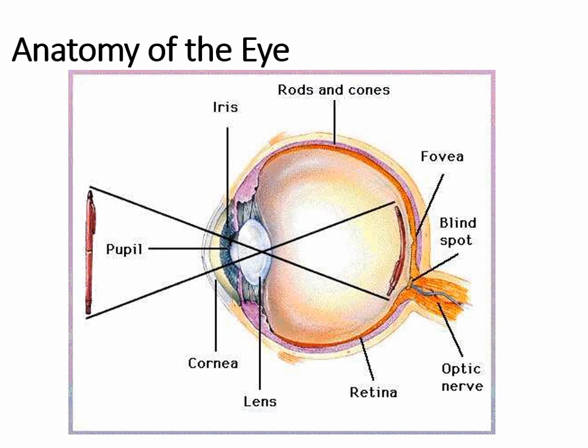The lens is going to focus light on the back lining of your eye, what we call the retina. It's important that you're familiar with the retina because it's at the retina that transduction takes place. What's contained within the retina are special neurons — sensory neurons. There are two main types called rods and cones.